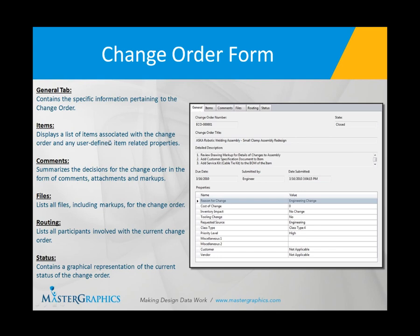The Items area contains the items associated with the change order — parts, assemblies, documents — anything that needs to be controlled by that change order is organized in the Items tab. The Comments area summarizes decisions for the change order in the form of comments, attachments, and markups. Much like online discussions, you can see a post and a reply indented below it — the Comments area has that ability to create a collaborative thread organized in one location. Finally, the Files area contains all related files: if I bring in a part into the Items tab, the related files would be its drawings, specifications, or any other information related to that particular file.